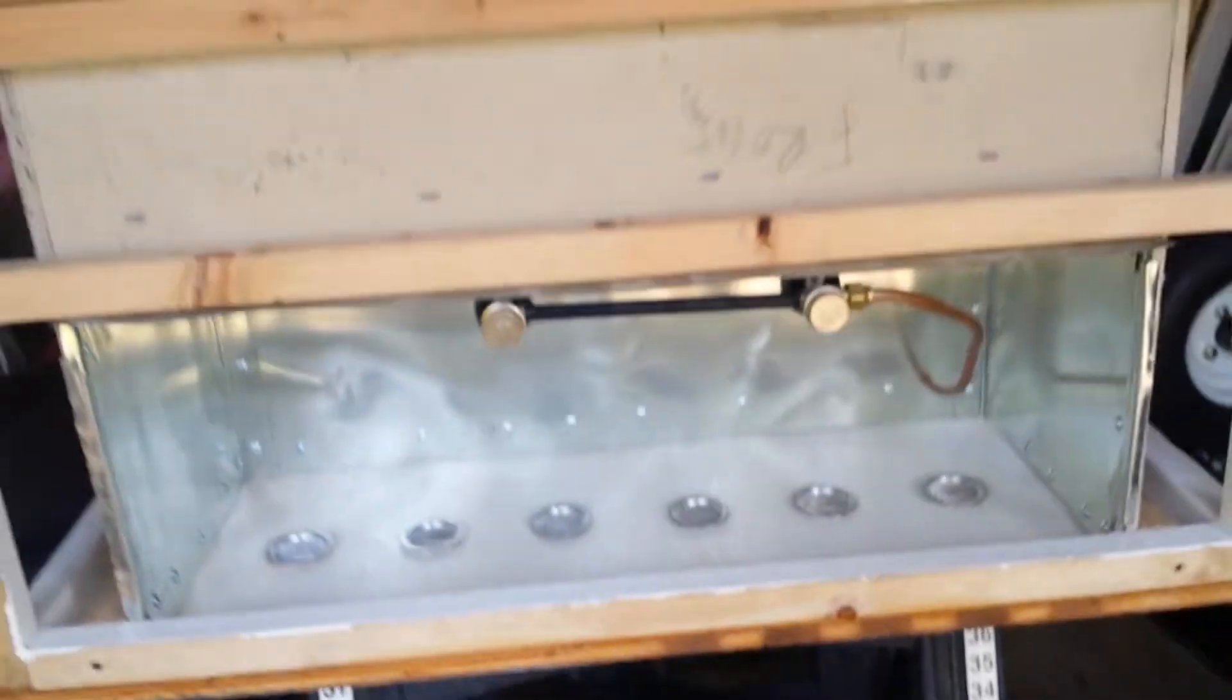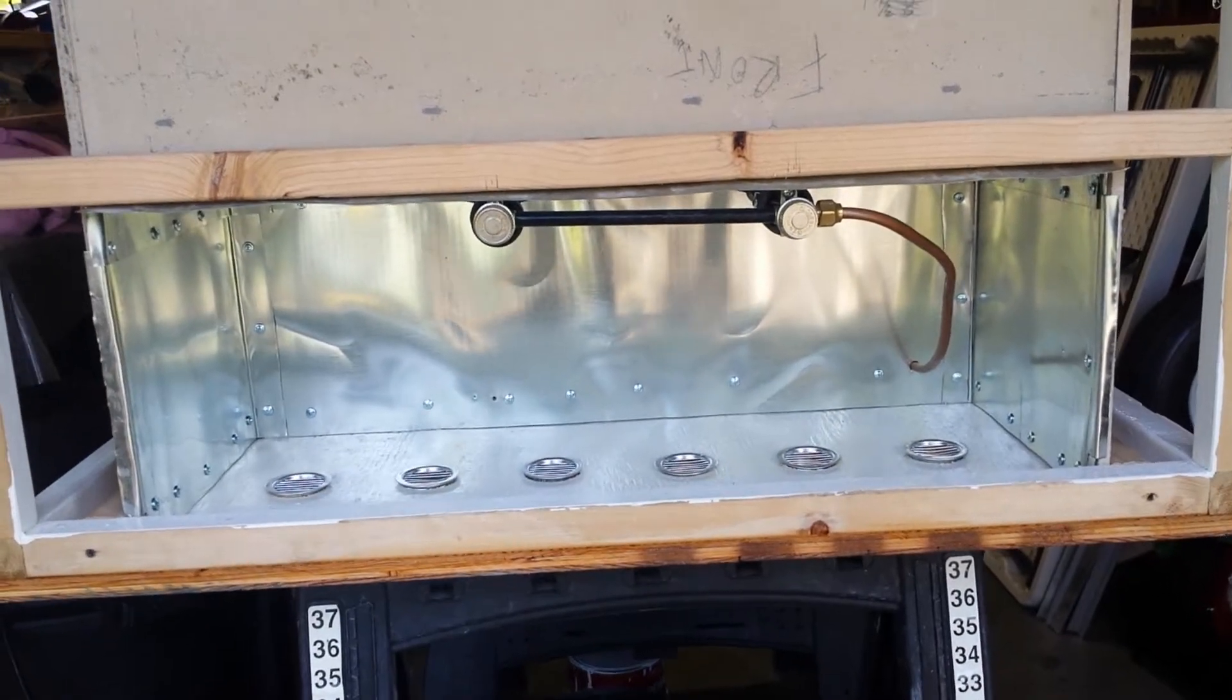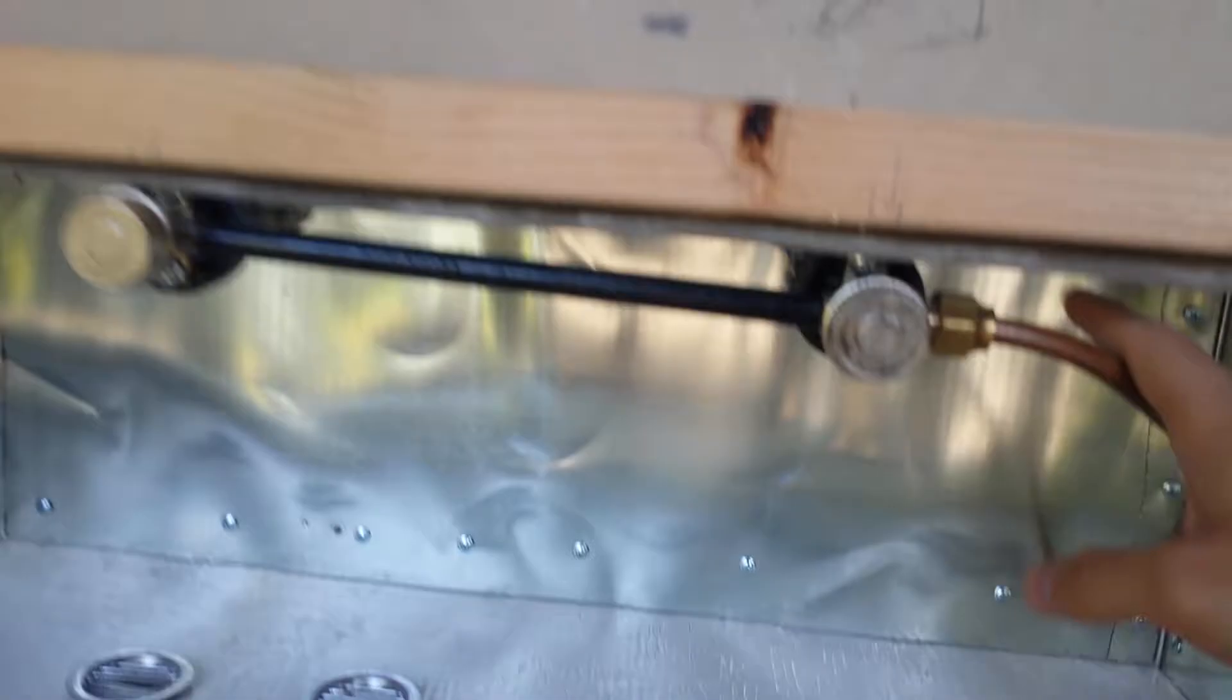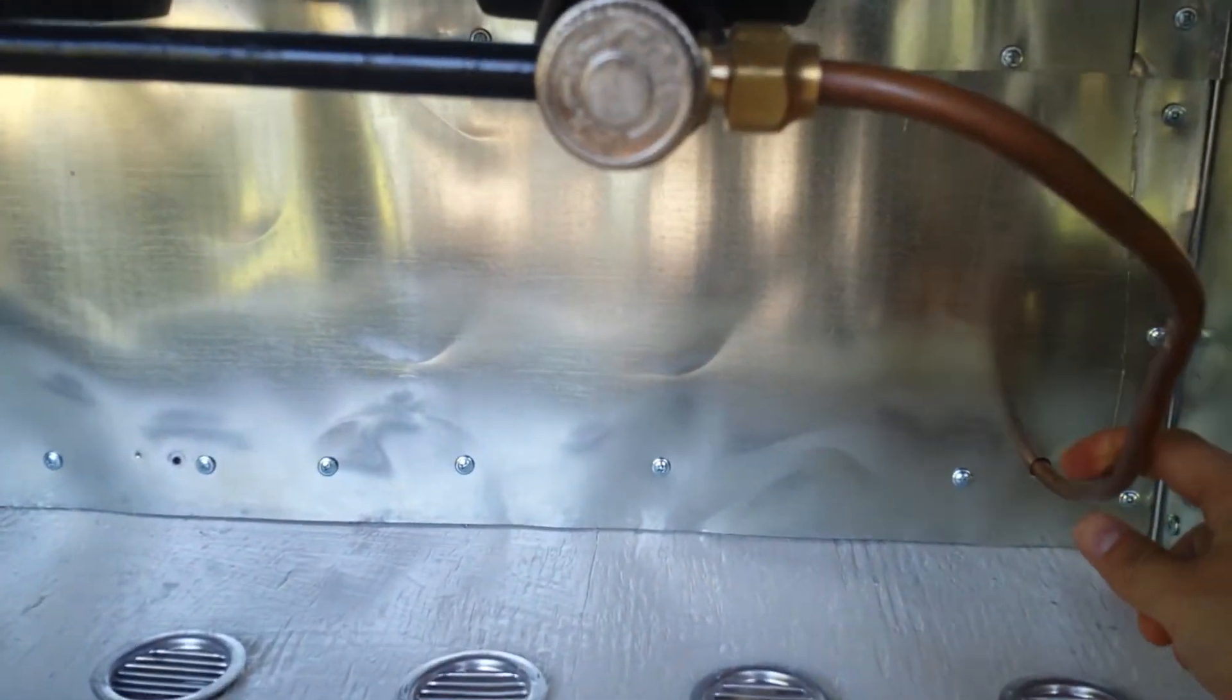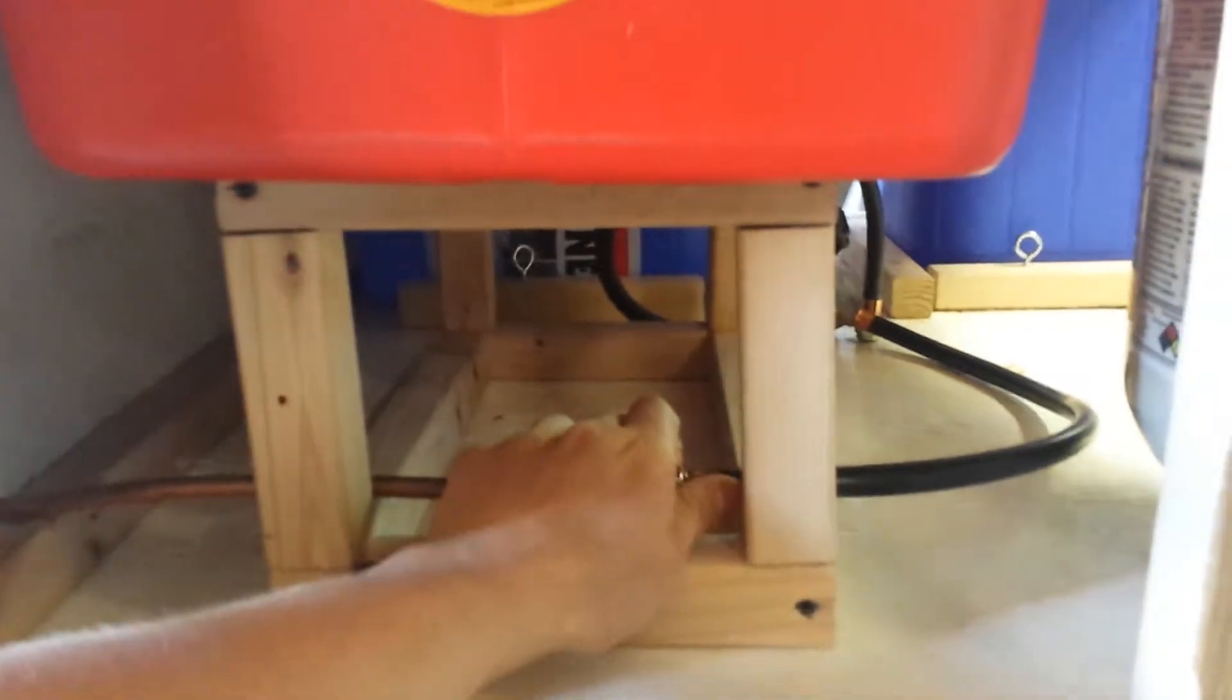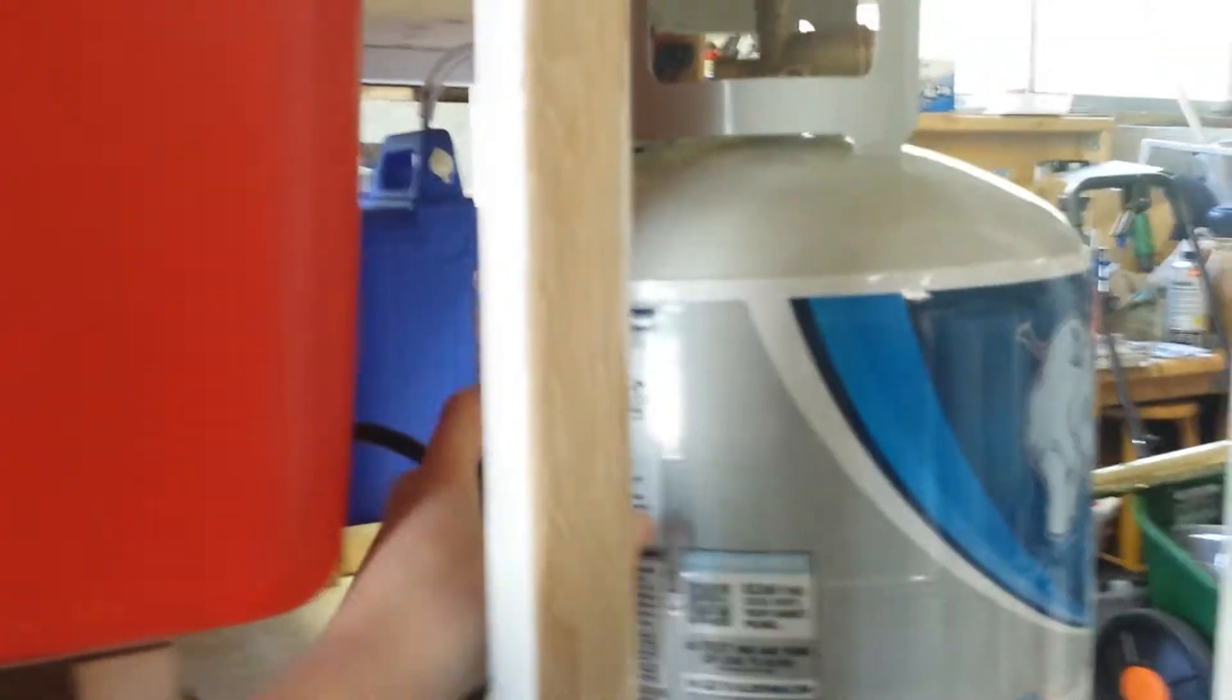We have gas burners with knobs in the front, and you can see the copper tube right here. This will carry the gas. That copper tube goes through this concrete wall, connects to a propane regulator which is not hooked up right now, and goes to the propane. So that's how we do our fire.